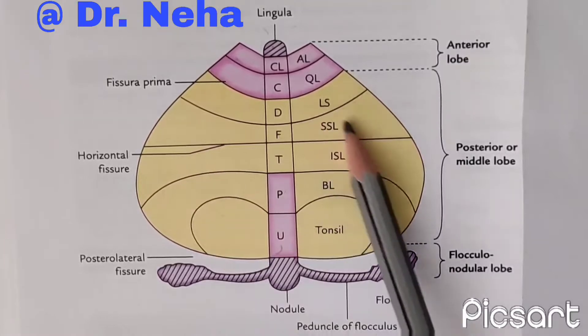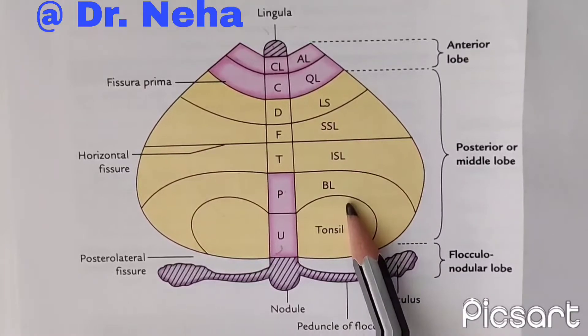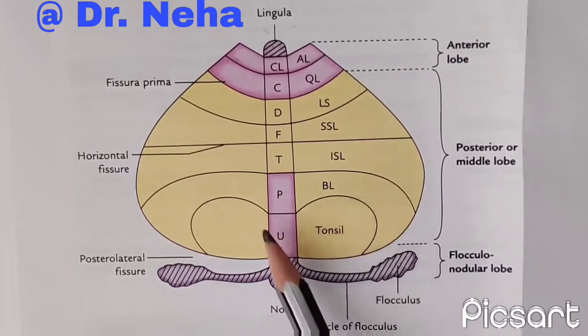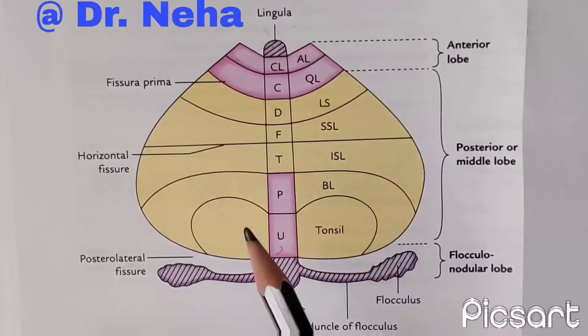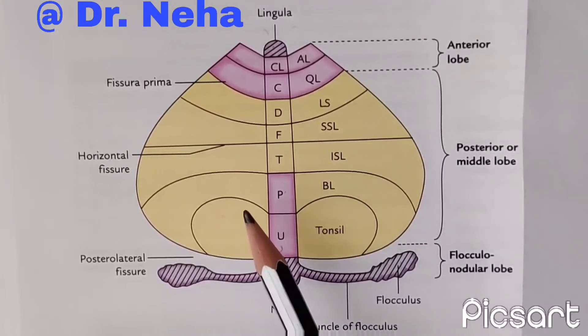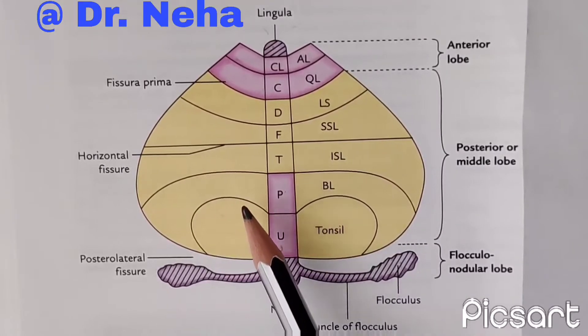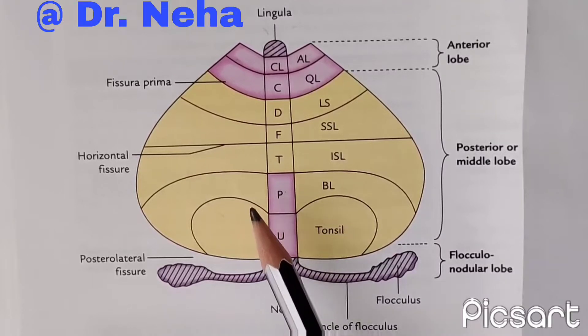Then we have the neocerebellum, shown in yellow. It is the whole of the posterior lobe except the pyramid and the uvula, and it is responsible for the smooth performance of highly skilled voluntary movements of precision.